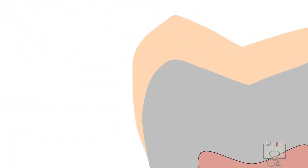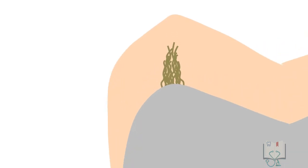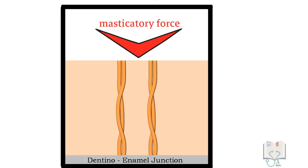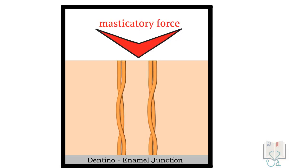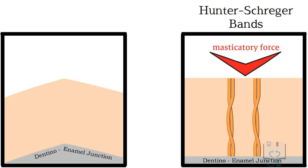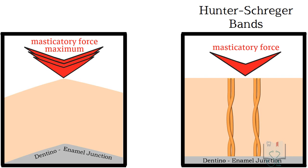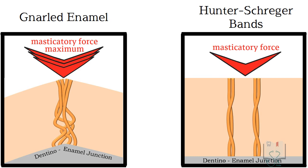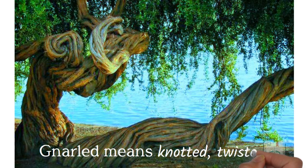Gnarled enamel is an optical appearance of enamel seen in the cusp or incisal ridge area. It originates from the dentino-enamel junction and runs towards the enamel surface. It also appears due to the tortuous path of enamel rods. However, in cuspal areas, as masticatory forces are maximum, the enamel rods show more pronounced undulations — again a functional adaptation. Here, rods are almost intertwined with each other.